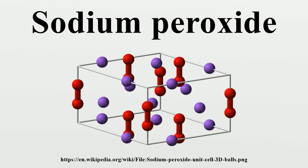Sodium peroxide is the inorganic compound with the formula Na2O2. This yellowish solid is the product of sodium ignited in excess oxygen. It is a strong base. It exists in several hydrates and peroxy hydrates including Na2O2·2H2O2·4H2O, Na2O2·2H2O, Na2O2·2H2O2, and Na2O2·8H2O.